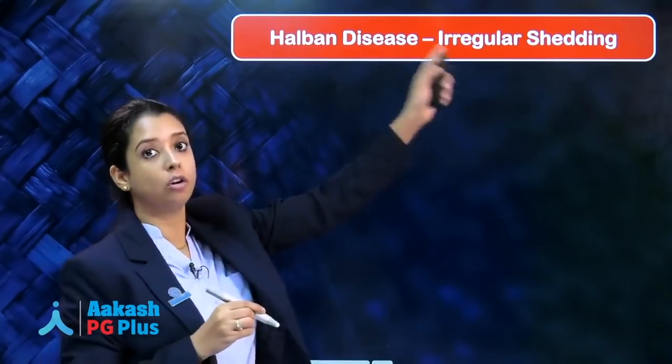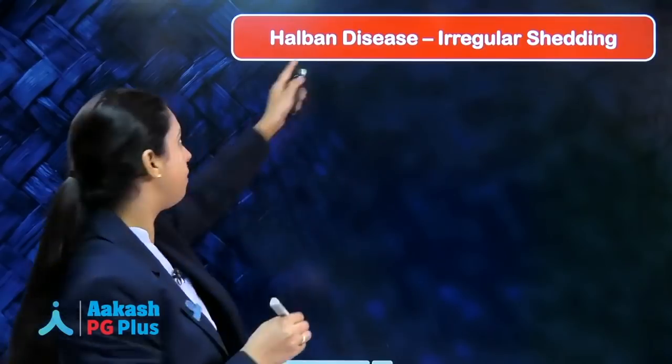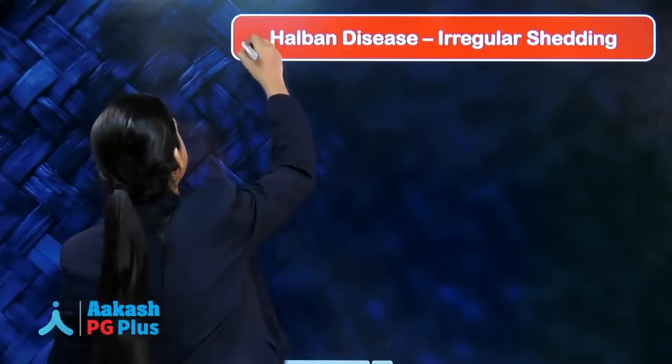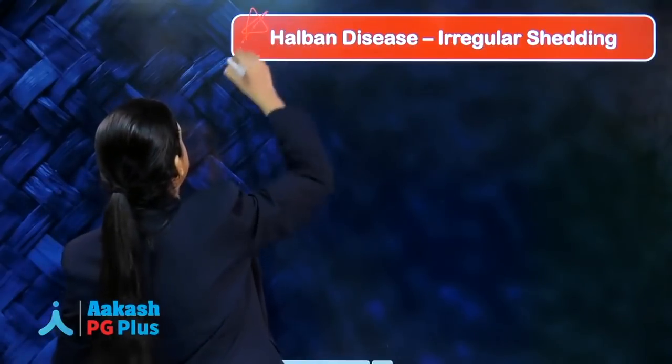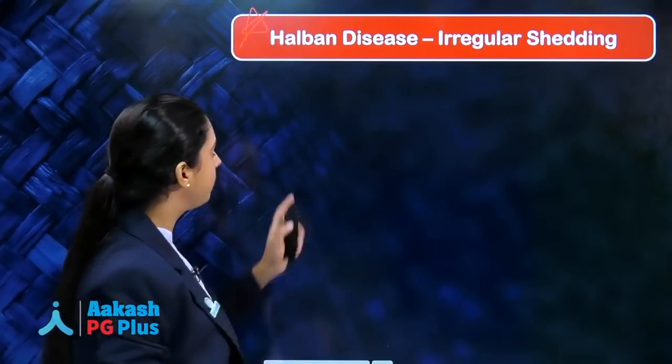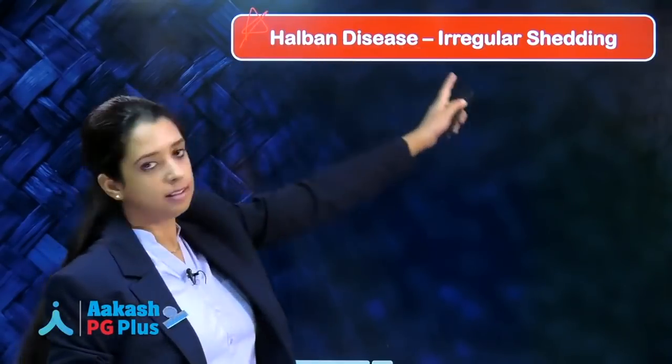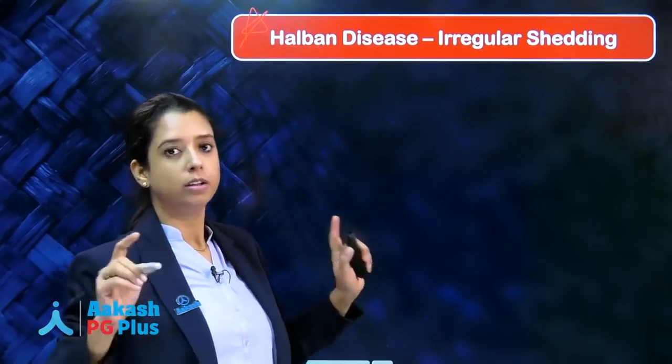In irregular shedding, also called Halban disease — very important, has been asked in exams — Halban disease is irregular shedding.